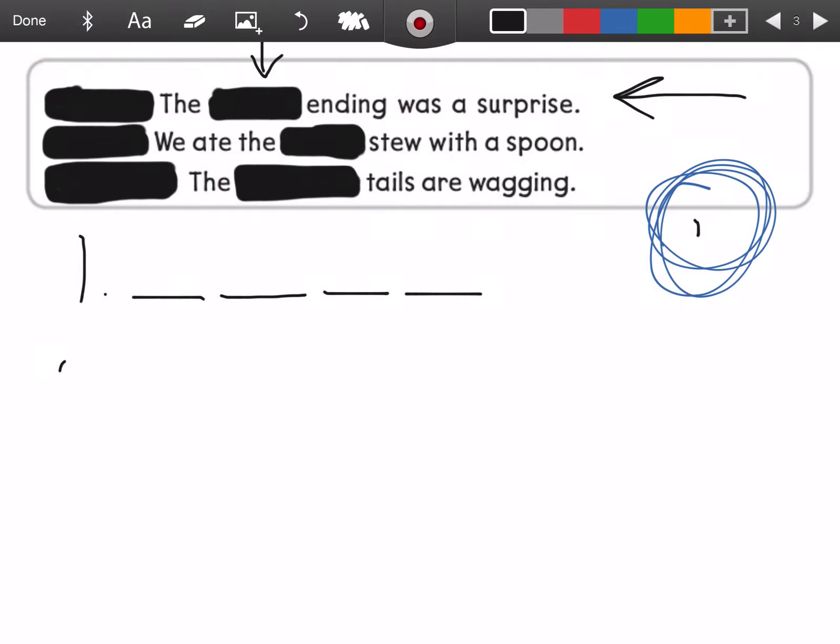Okay. Number two. Number two goes with this sentence. We ate the cook's stew with a spoon. Cooks. C. U. C. S. Cooks. Now the stew belongs to the cook because he made it. He's sharing it with you. Because it belongs to him, don't forget the apostrophe.